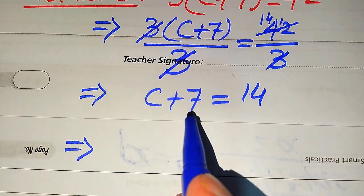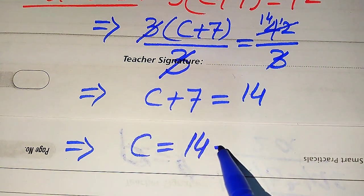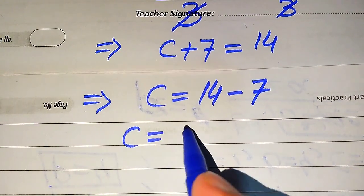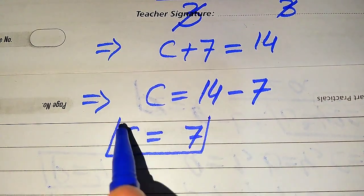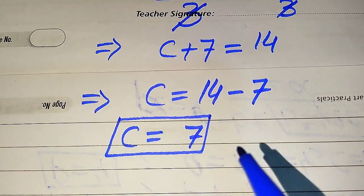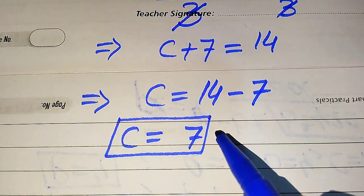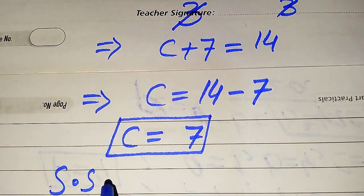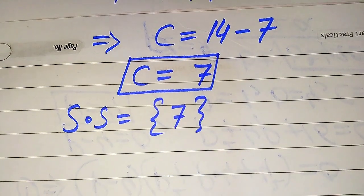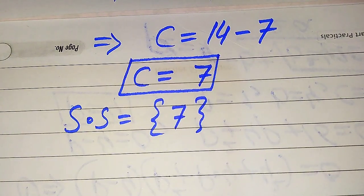Now we solve for c by moving plus 7 to the right hand side, giving us c equals 14 minus 7, which equals 7. From both methods we get the same value of c equals 7. Since we already verified this value satisfies the given equation in the first method, the solution set of the given equation is 7. Thank you so much for watching this video. Please subscribe to my channel for more exciting videos.